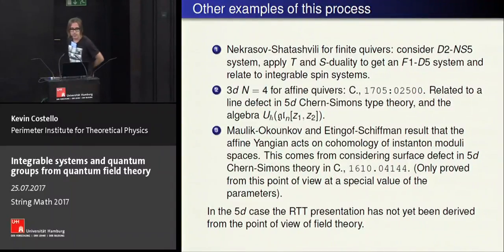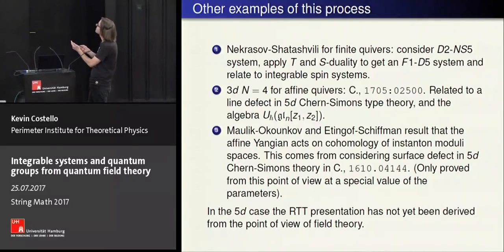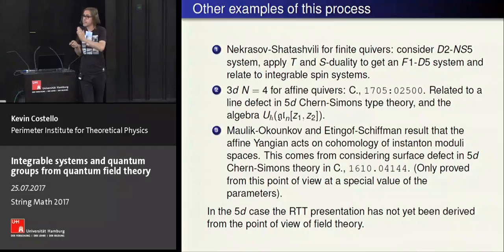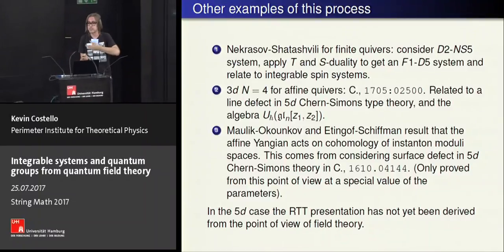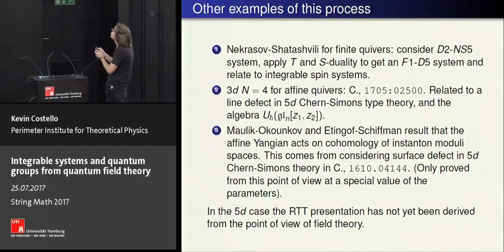Let me discuss other examples. The Nekrasov-Shatashvili correspondence works similarly: in type IIA, consider a D2/NS5 system where the D2 branes are wrapped on a circle. Applying T and S duality, the D2 branes become F1s ending on D5, and we find that the states of the D2 branes are realized as states at the end of copies of fundamental Wilson lines in our theory, matching the usual spin chain. This is work in progress with Junya Yagi.